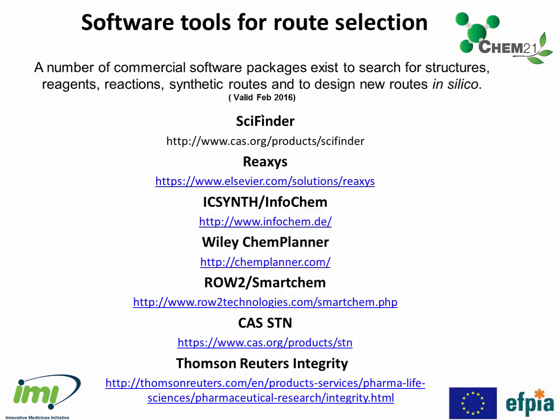So how do we gather together the information needed to design synthetic routes? There are now quite a wide number of software packages available to do this. These are very commonly used by medicinal and process chemists to seek out information on compounds, intermediates, and reactions, and are now helping to design in silico new synthetic routes to APIs of choice.